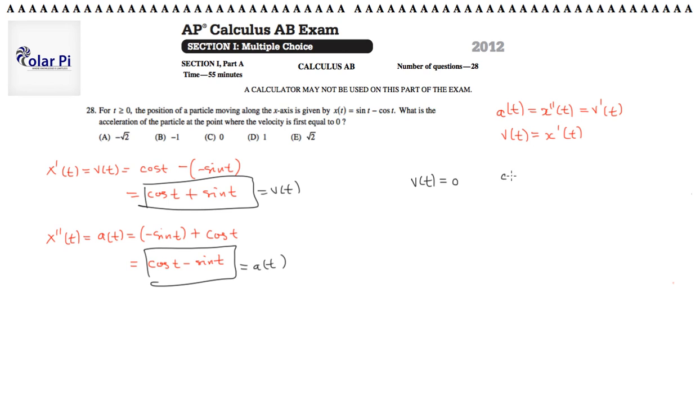It's equal to zero when cosine t is equal to negative sine t. That, of course, that of course means negative cosine t is equal to sine t. And dividing this last equation by cosine on both sides, we could write negative one is equal to sine t over cosine t. And of course the statement is saying where tangent of t is equal to negative one.